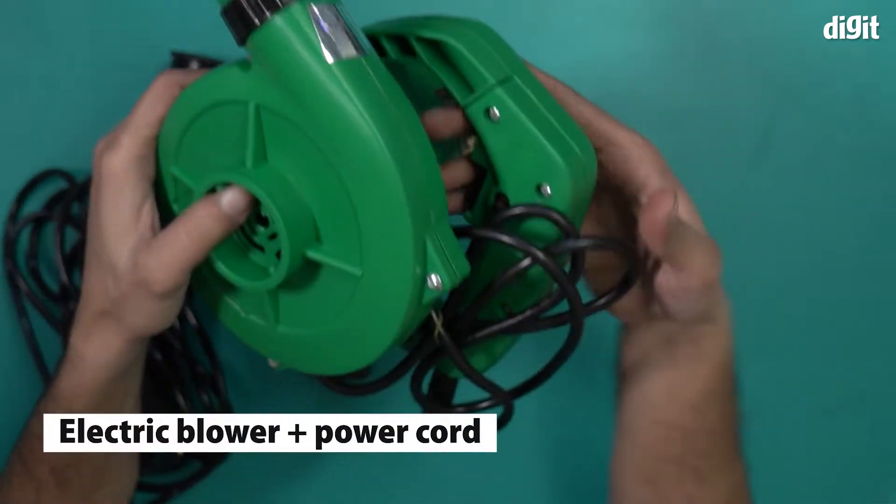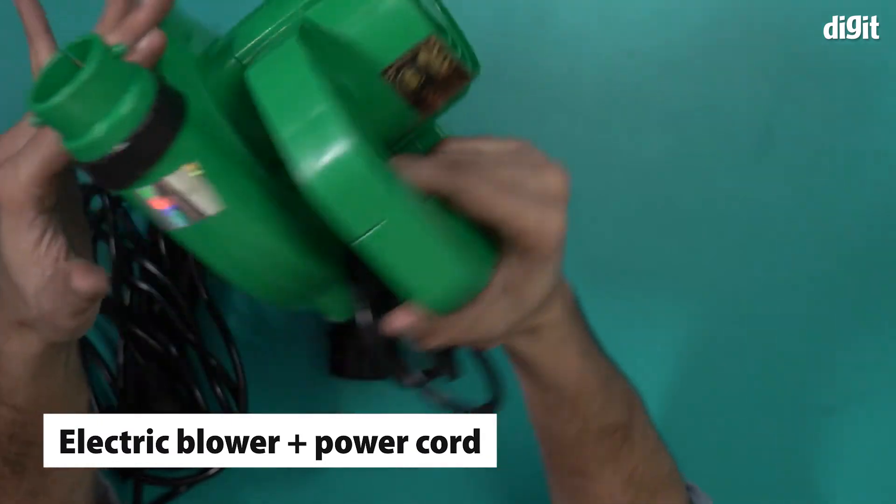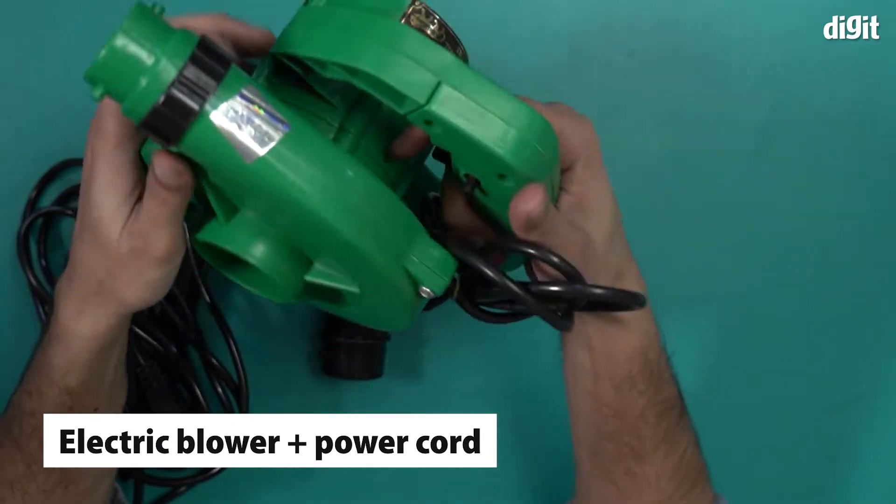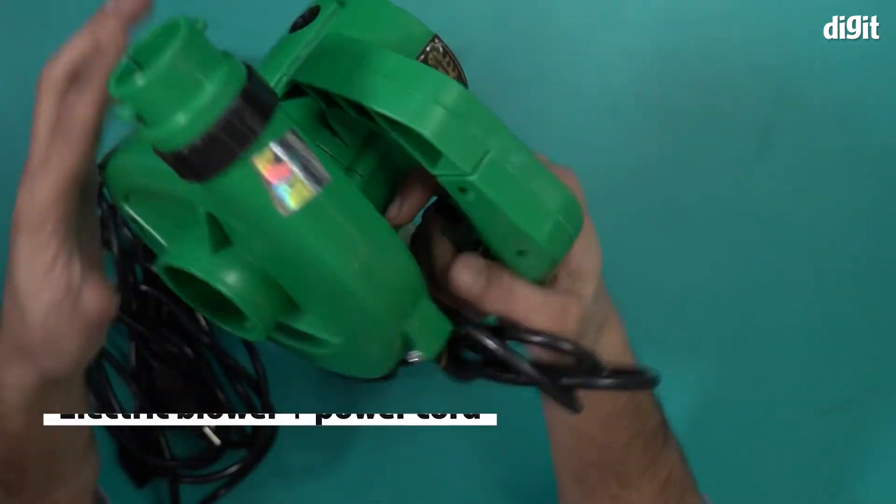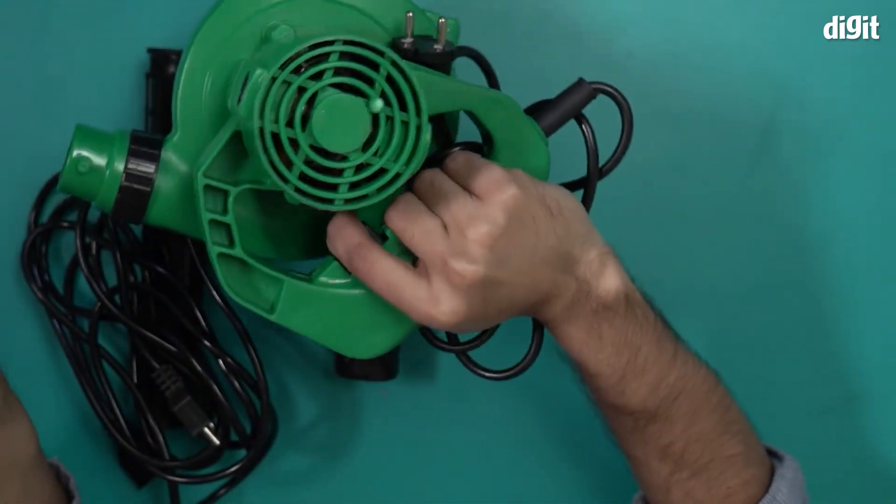Inside the box, this is what the blower looks like. It's a professional blower made out of ABS plastic with this green color. It comes with this particular handle over here.